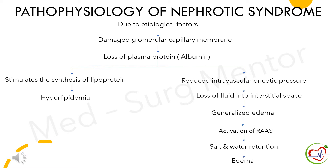Next is the pathophysiology of nephrotic syndrome. Due to etiological factors, the glomerular capillary membrane is damaged, causing too much protein to leak from the blood into the urine. As a result, there is increased stimulation of lipoprotein synthesis, leading to hyperlipidemia. Simultaneously, the loss of plasma protein reduces intravascular oncotic pressure.